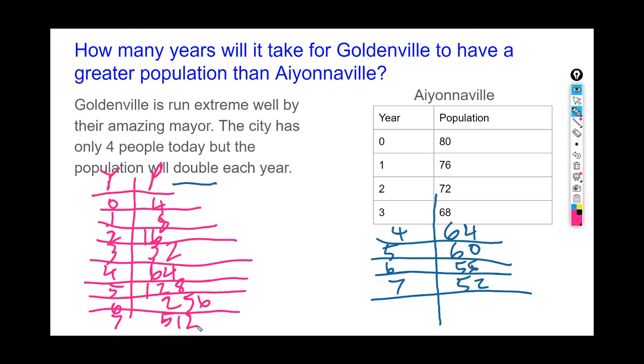Let's see what the question says. It says how many years will it take for Goldenville to have a greater population than Aiyonnaville? So I'm looking for the first year where Goldenville is larger than Aiyonnaville. I can see at year 4, they have the exact same population of 64. But then at year 5, Goldenville has a population of 128 while Aiyonnaville has 60. So I know it takes five years for the population of Goldenville to surpass the population of Aiyonnaville.